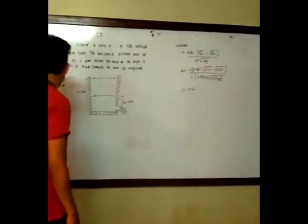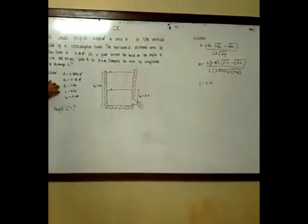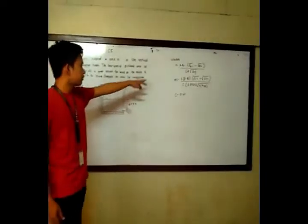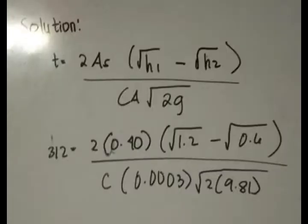So since we have these values, we can just substitute with our formula. And we have 12 equals 2 times 0.40 times the square root of 1.2 minus the square root of 0.6, over c times 0.0003 and square root of 2 times 9.81.